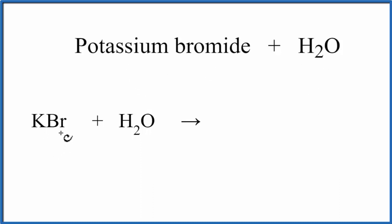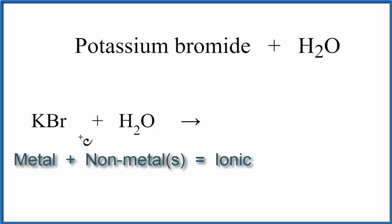K, potassium, that's a metal, and bromine is a nonmetal. So we have a metal and a nonmetal bonded together. That's an ionic compound, so we need to think about ions.